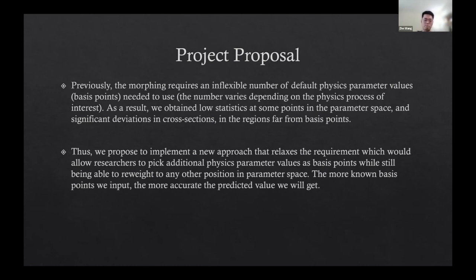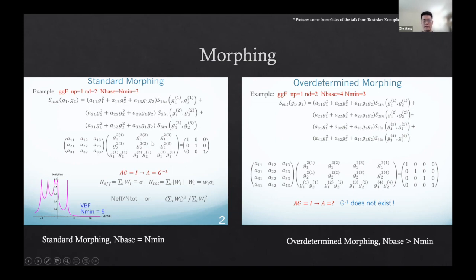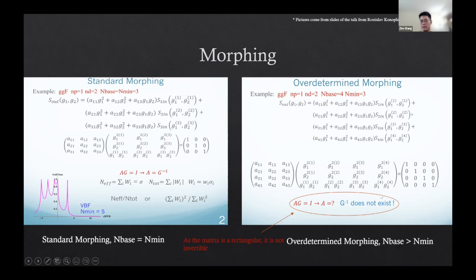We proposed implementing a new approach that relaxes the requirements, allowing researchers to pick additional physics parameter values as basis points while still being able to interpolate to any other position. The more basis points we input, the more accurate the predicted value. The equation is the multiplication of the morphing matrix and the coupling matrix, and the results should be unity for the basic samples. To get the morphing matrix, we invert the coupling matrix — this works fine for standard morphing with M_base equals N equals 3. However, if we input more basis points, we get a rectangular matrix, which is not invertible.